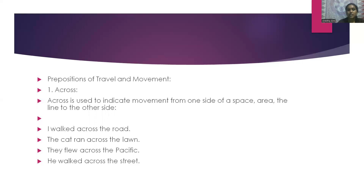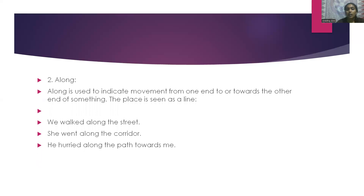The next type is prepositions of travel and movement. The first word is 'across'. Across is used to indicate movement from one side of a place, area, or line to the other side. For example: I walked across the road. The cat ran across the lawn. They flew across the Pacific. The second word is 'along'. Along is used to indicate movement from one end to or towards the other end of something, where the place is seen as a line. For example: we walked along the street. She went along the corridor. He hurried along the path towards me.